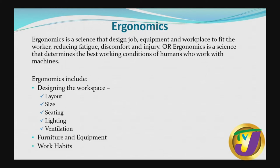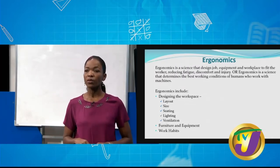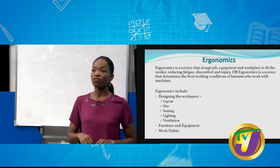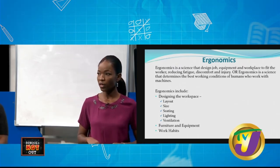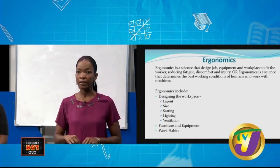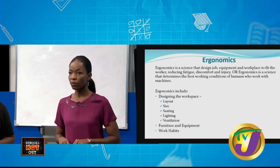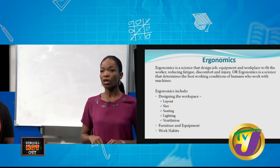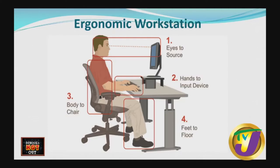Lighting is very important — you should design the office so that you are getting sufficient light, whether from natural sunlight or artificial lighting. Ventilation is also important to ensure that all persons within the space are getting enough oxygen and that the workspace is comfortable. To ensure the job is done efficiently, you must ensure that office furniture and equipment are sufficient and good enough to get the job done.